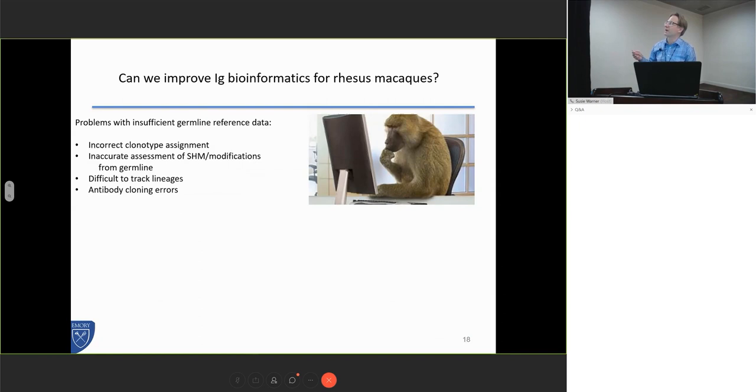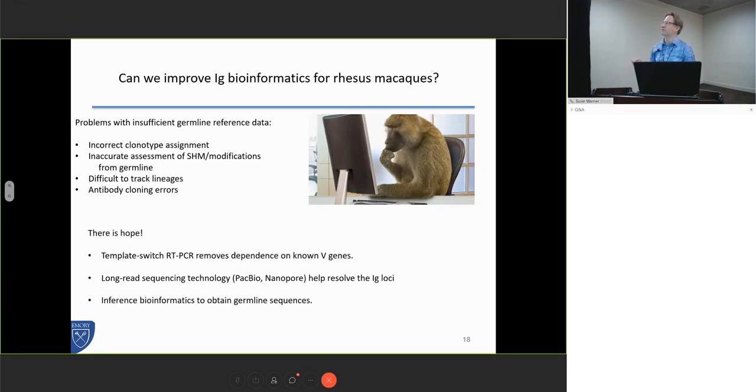The genome I like to use a lot is MACM, and it does have the heavy and light chain loci misassigned according to a more recent reference. That actually doesn't matter, as I'll show in this next slide. Can we improve bioinformatics? We've got a lot of problems still. If you don't have good germline reference data, you can't call your clonotypes correctly. It's very hard to follow somatic hypermutations and understand how impactful your vaccine or adjuvant is. It's difficult to track lineages, and you might actually even start cloning the wrong antibodies out if you're relying on a reference.